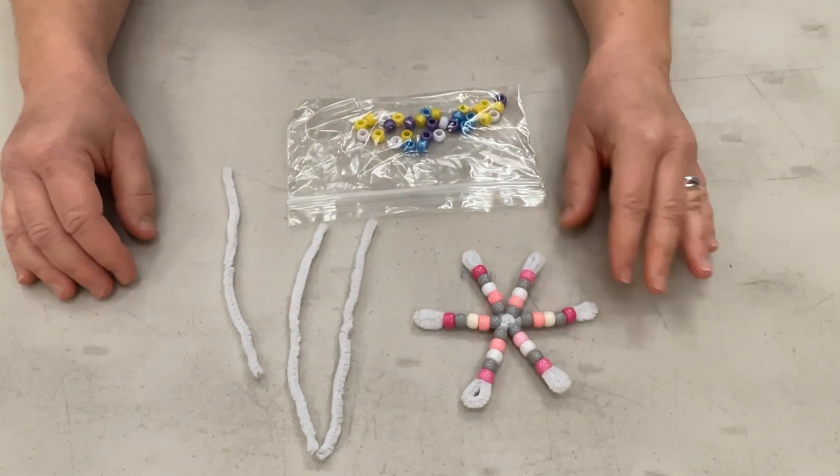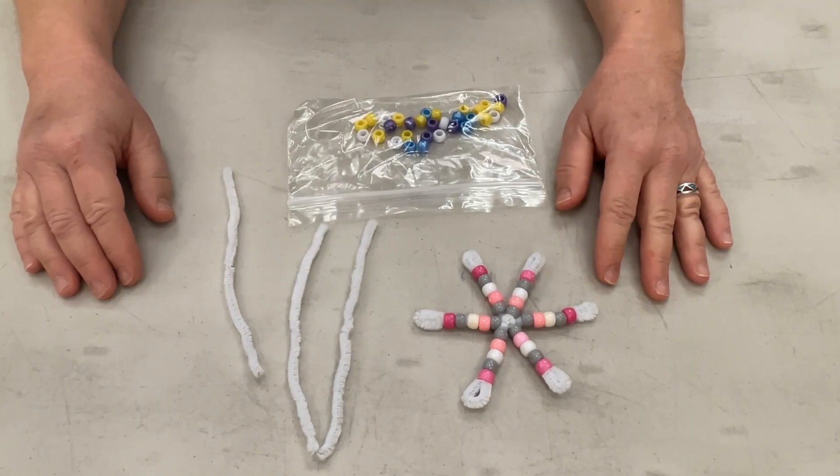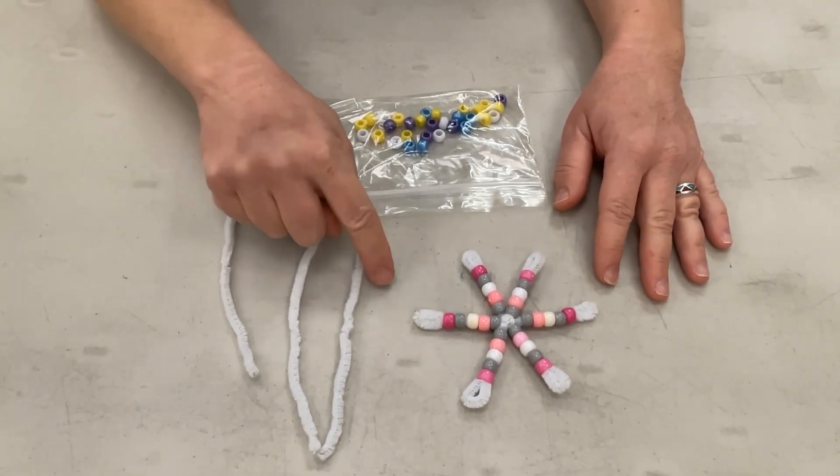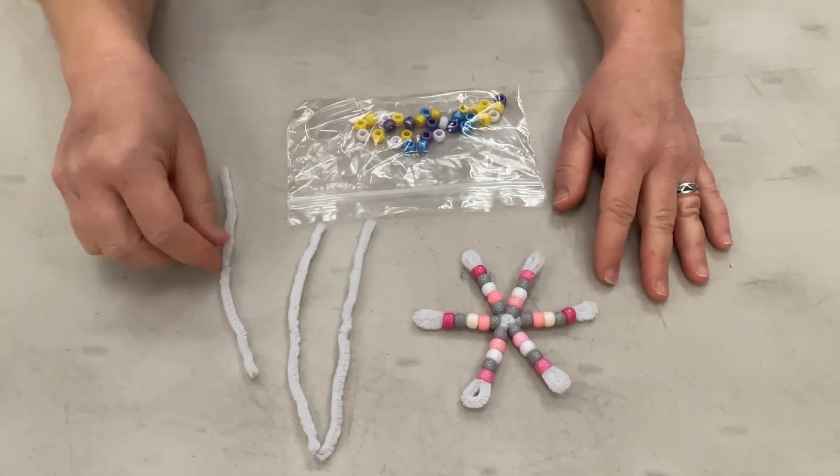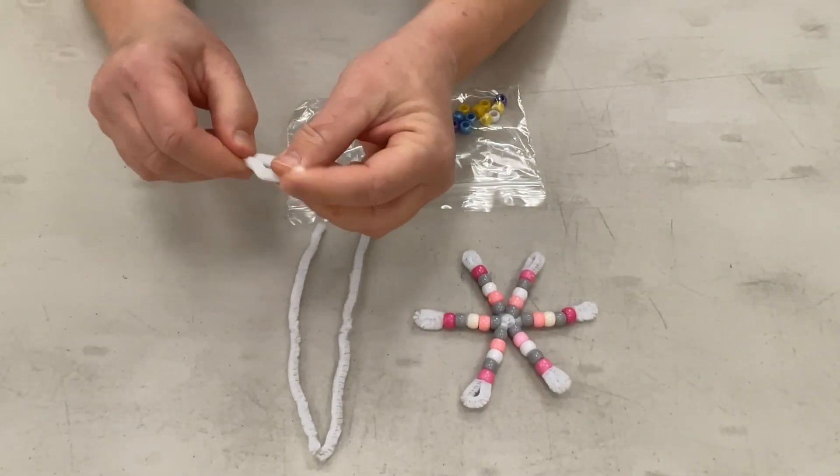To start with, we take two pipe cleaners and cut them in half. We're going to use three halves. One, two, three. We'll take our pipe cleaners and fold them into quarters, like so.